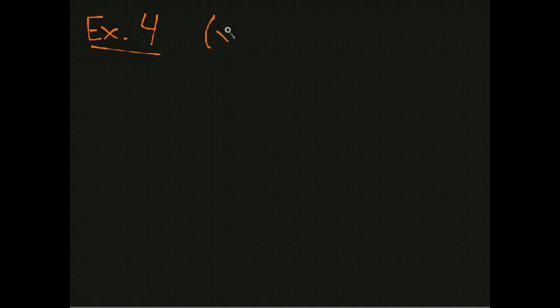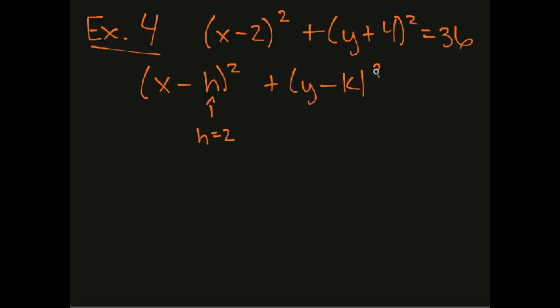Example 4 says we want to graph the equation (x - 2)² + (x + 4)² = 36. Let's think about the generic formula (x - h)² + (y - k)². So h is 2. Well, we don't have a minus, we have a plus. So what does that mean? Well, that means that k is actually -4. And lastly, it's supposed to be equal to r². What is 36 the square of? Well, that's 6. So r is 6.